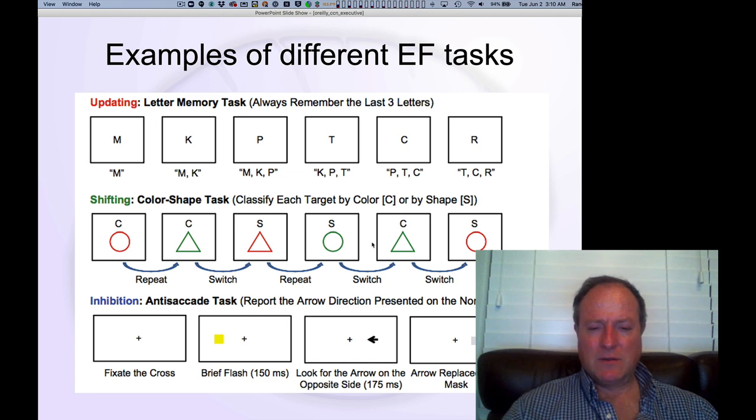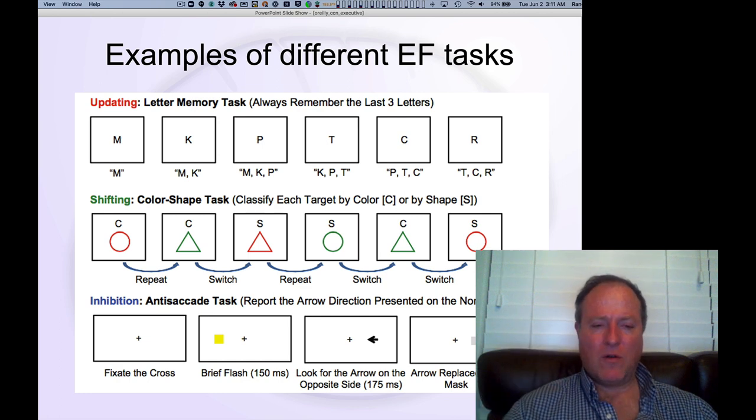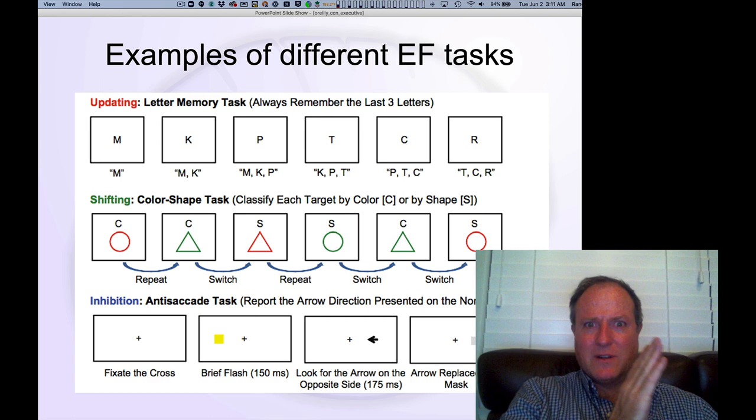Those are some of the differences between those two, and then finally we have these tasks which could be categorized as inhibition, but actually in later work Miyake and Friedman have characterized these as core active maintenance tasks. They really tap into your ability to hold on to information over time. In this anti-saccade task, one of the best examples, you fixate on this central place, you get a very brief flash on one side of the screen or the other, and then what you have to do is instead of looking over there where the flash was, which is what your eyes and your brain want to do...